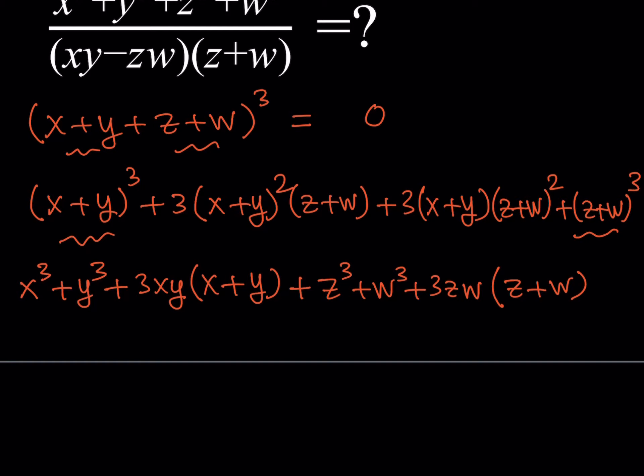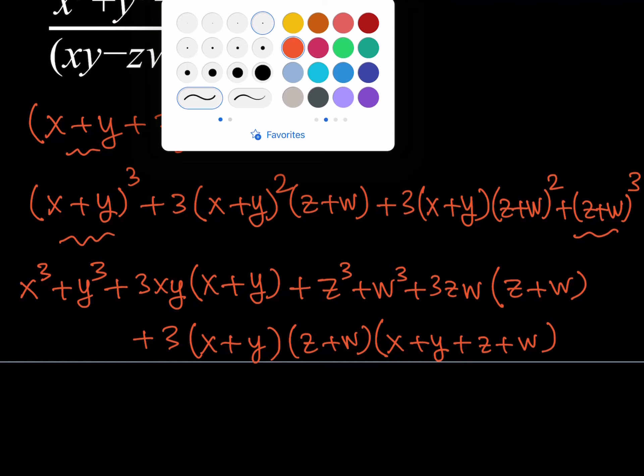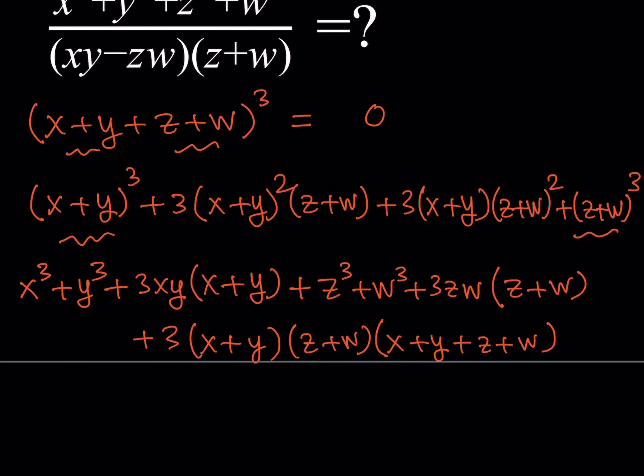This is not the whole thing, because we have two more terms in the middle. Notice that they have a common factor, which is 3 times x plus y times z plus w. And this is actually real fun because x plus y plus z plus w is equal to zero. So this is equal to zero. Therefore, the whole product disappears.